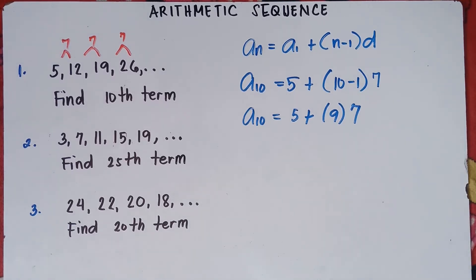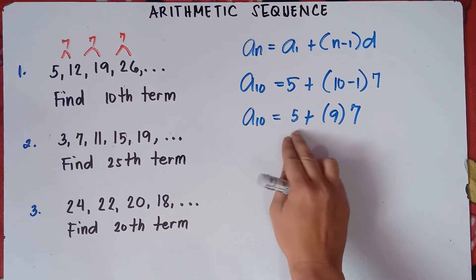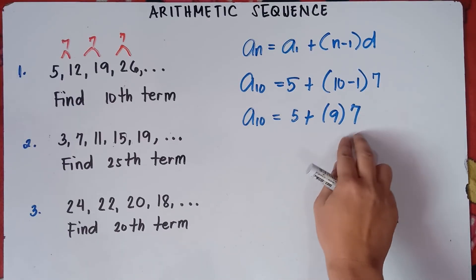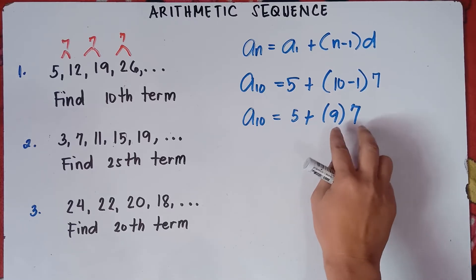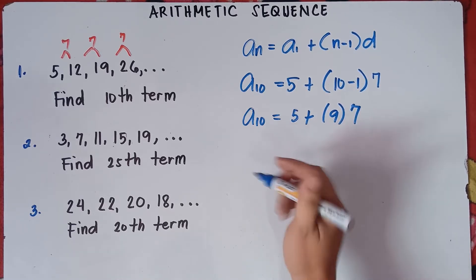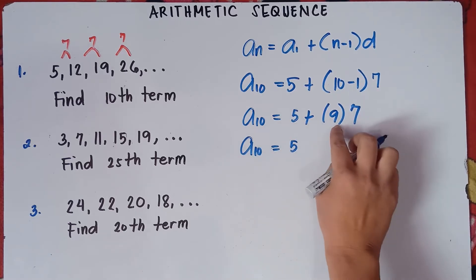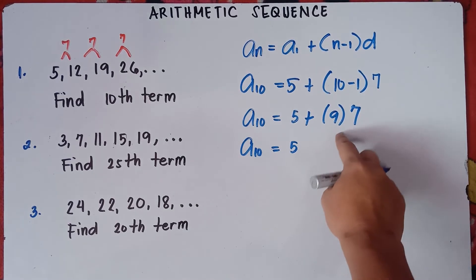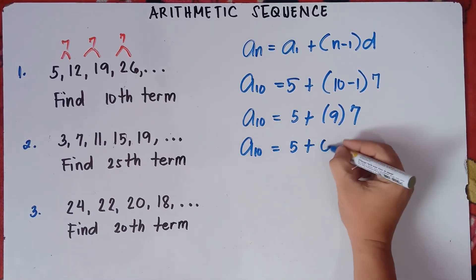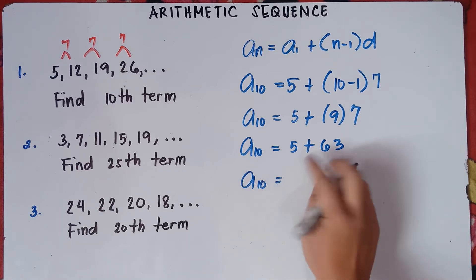Follow PEMDAS — multiplication comes first before addition. So we do not add 5 plus 9 first; we simplify 9 times 7 first, which equals 63. Then a sub 10 equals 5 plus 63, so a sub 10 equals 68.